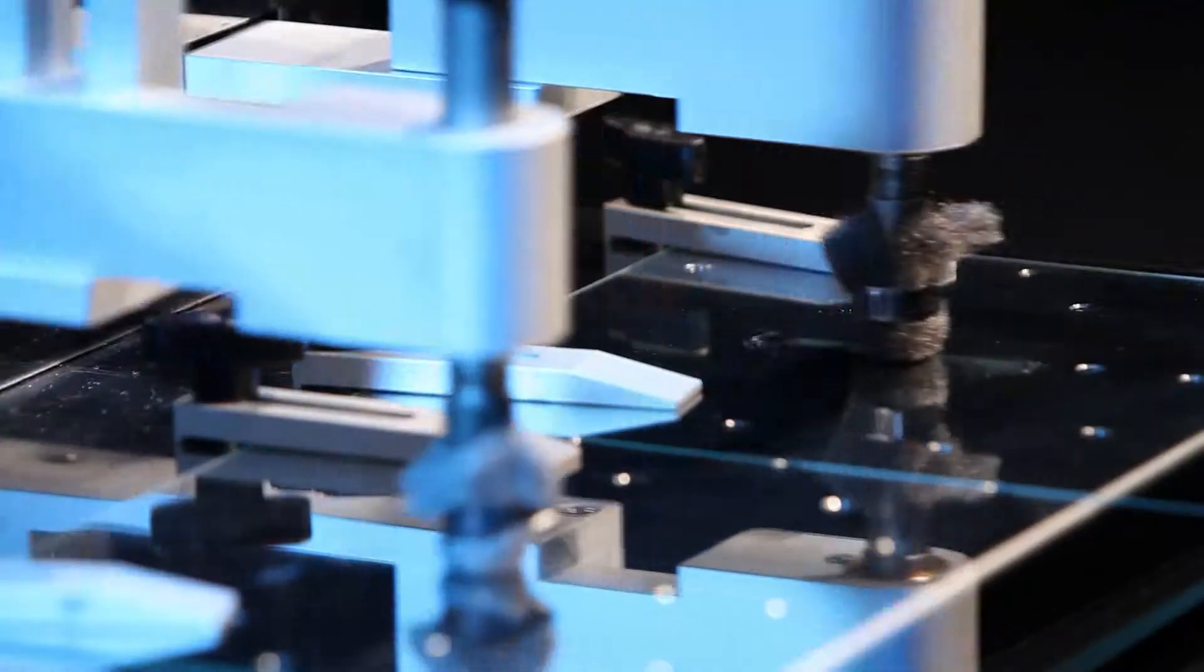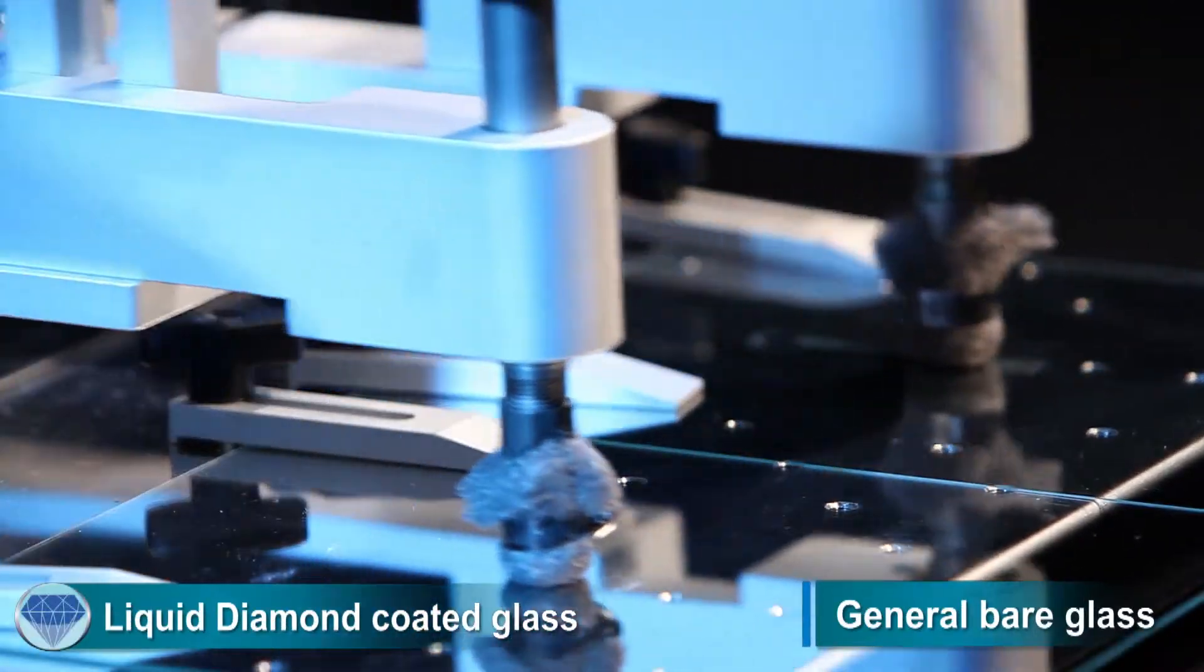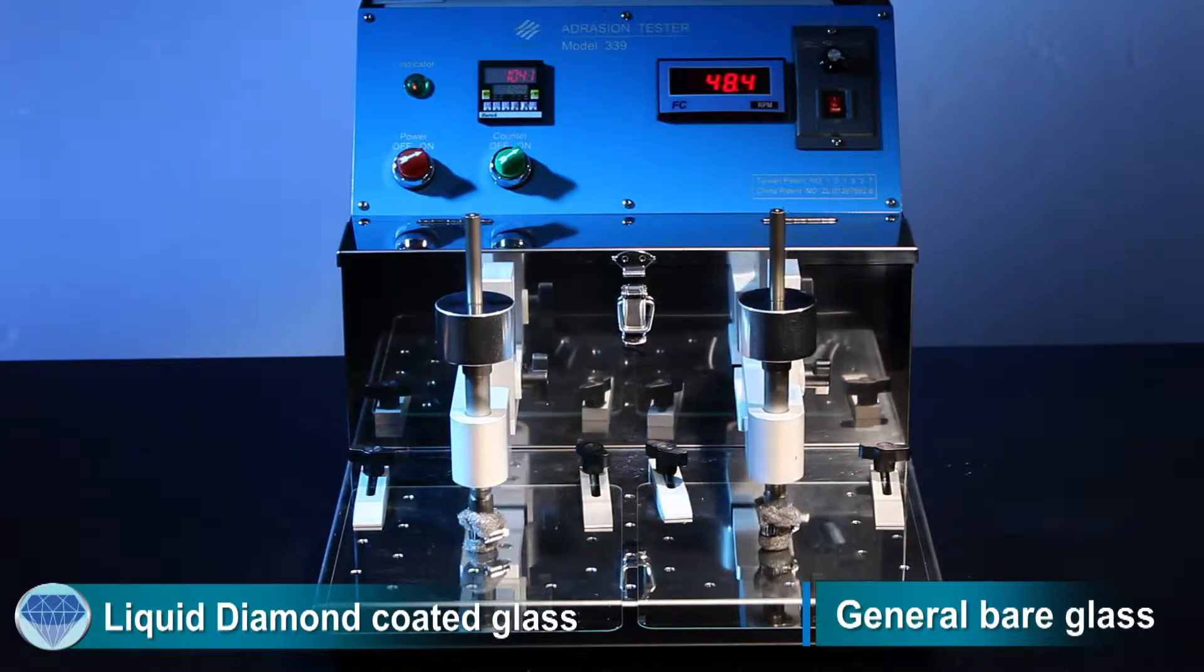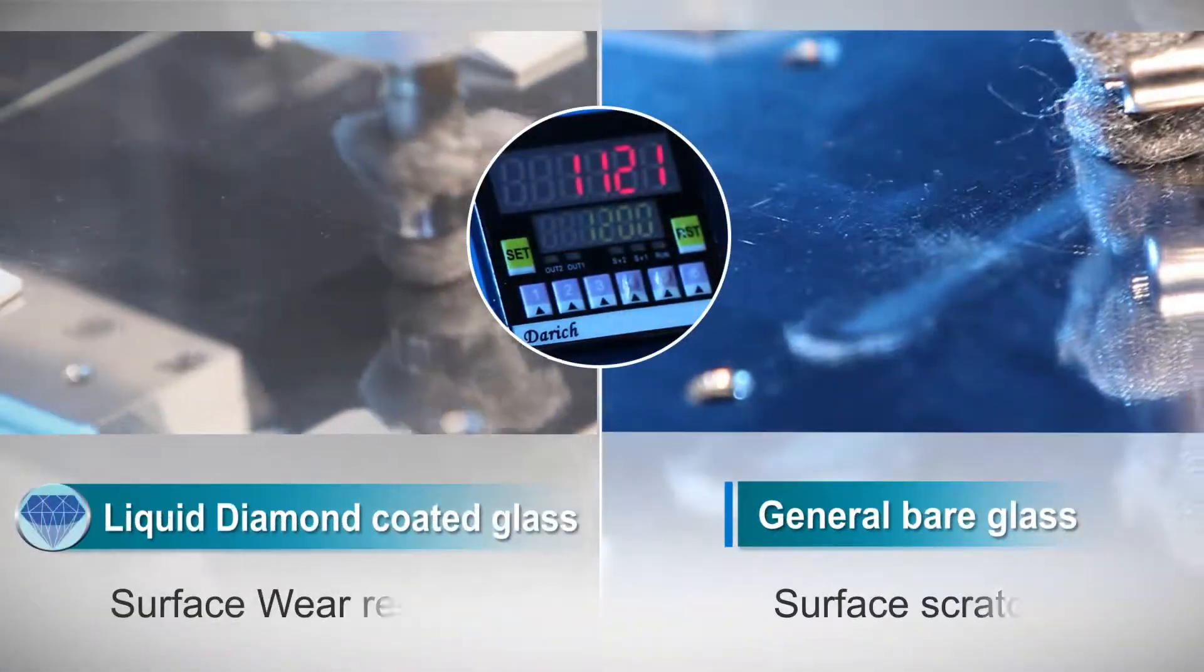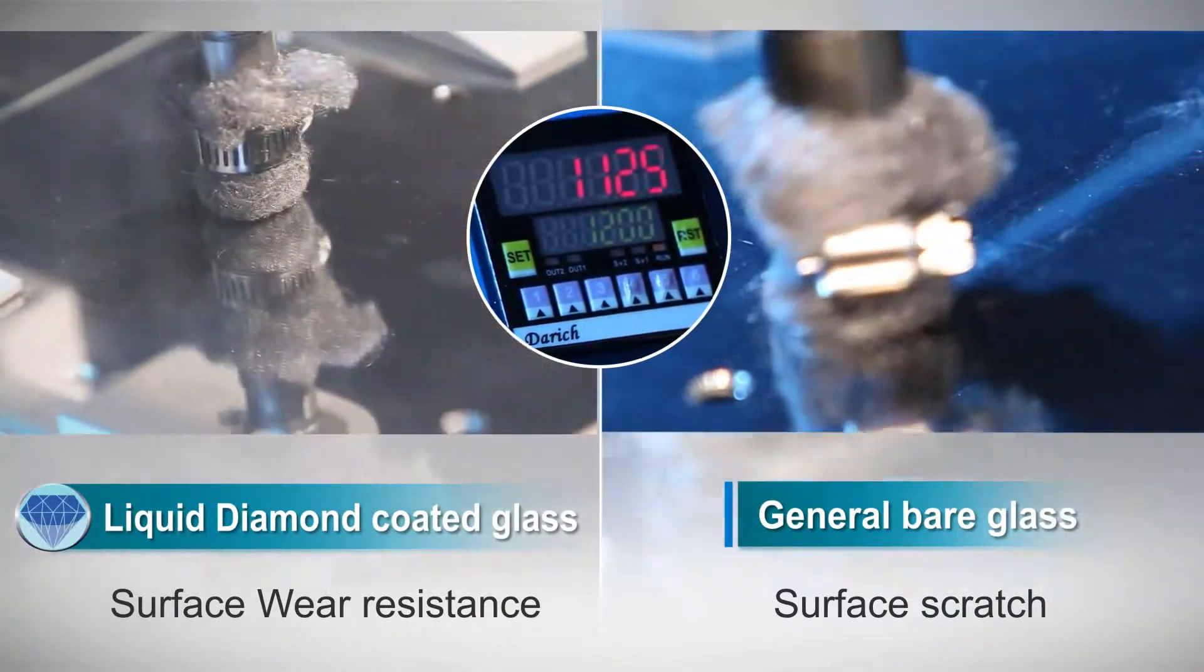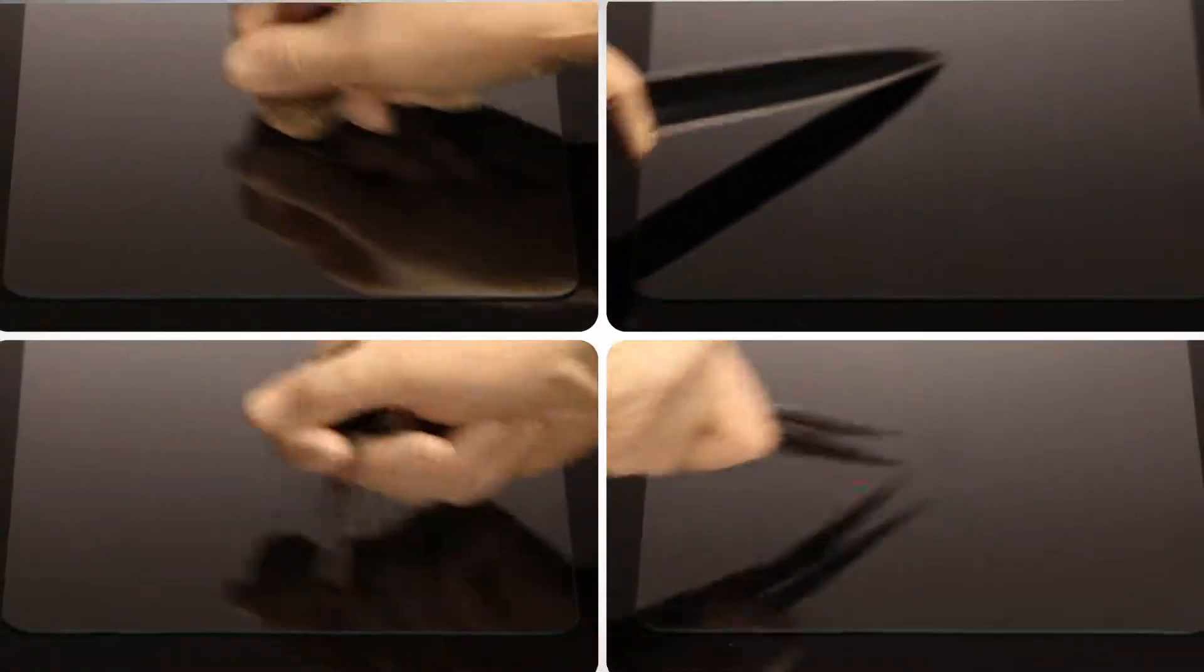Using the steel wool rubbing test, the left side Liquid Diamond surface approaches 9H hardness, able to withstand a 500 gram steel wool test up to several thousand times. The right side bare glass is already scratched. We can scratch test the surface with coins, spoons, clips, and knives. The Liquid Diamond treated surface remains undamaged.